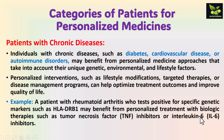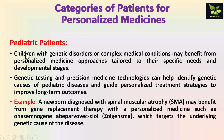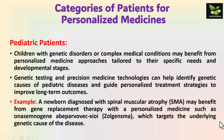Pediatric patients — children with genetic disorders or complex medical conditions — will also benefit from personalized medication approaches. Genetic testing and precision medicine technologies are used to identify the genetic causes of pediatric diseases, and treatment strategies are planned to improve long-term outcomes. For example, a newborn diagnosed with spinal muscular atrophy (SMA) may benefit from gene replacement therapy with a personalized medicine such as onasemnogene abeparvovec-xioi (Zolgensma), which targets the underlying genetic cause of the disease.